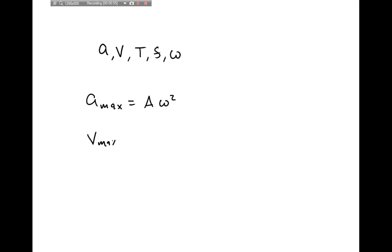And v_max will be equal to A times omega. Likewise, we have that the frequency will be equal to one over the period, and the angular frequency will equal 2 pi divided by the period. These equations hold for any harmonic oscillator, so it doesn't matter if it's a mass attached to a spring or if it's a mass hanging from a string swinging back and forth.